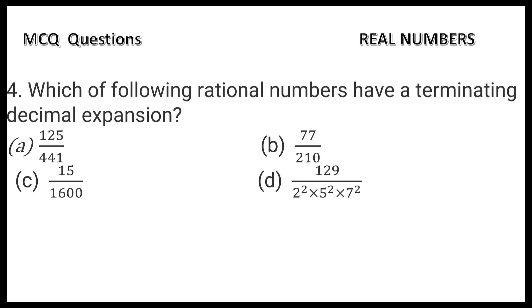The fourth question is: Which of the following rational numbers have a terminating decimal expansion? To have a terminating decimal expansion, the denominator should be in the form 2^m × 5^n.